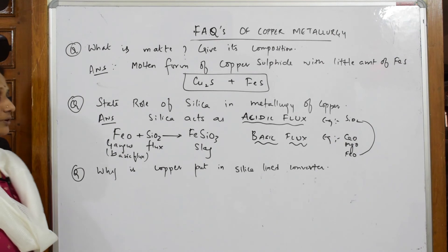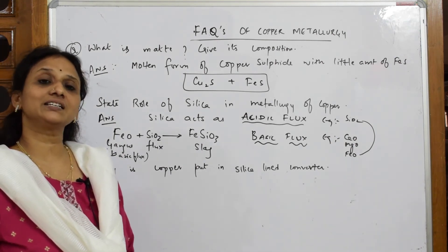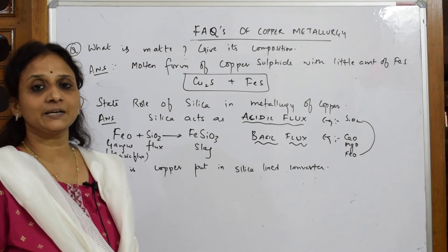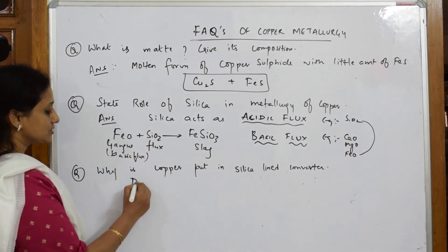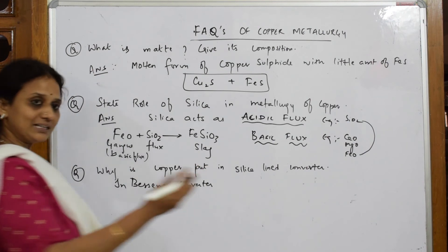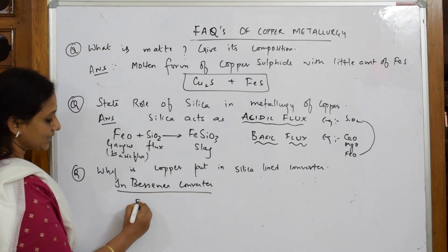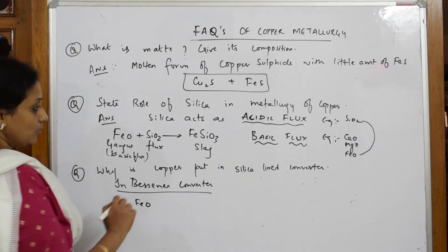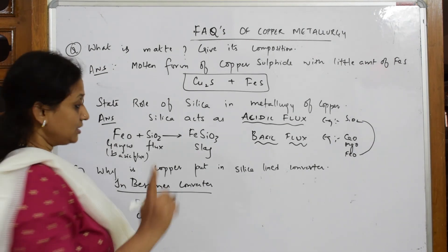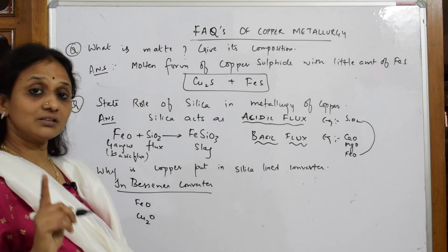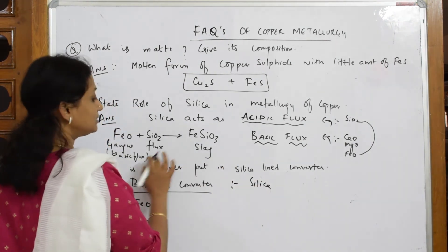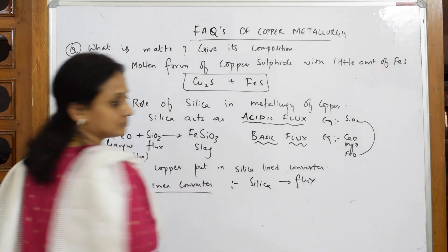Why is copper put in a silica-lined converter, i.e., the Bessemer converter? In the Bessemer converter, two important things come in from smelting: iron oxide and copper oxide. The iron oxide combines with the silica lining — silica acts as flux here.